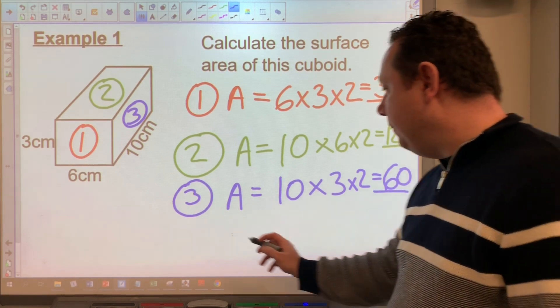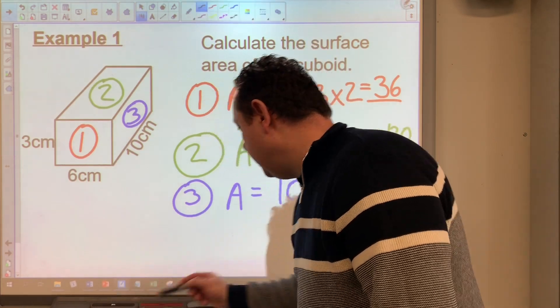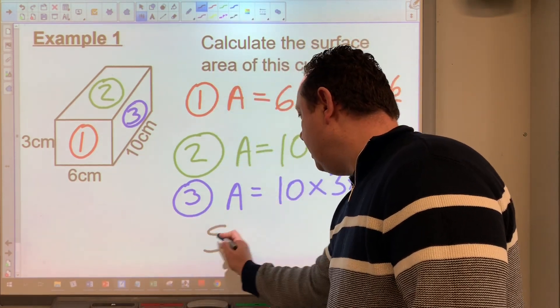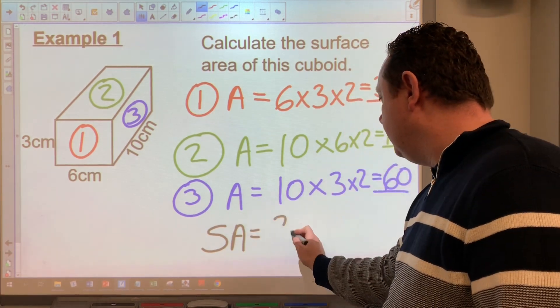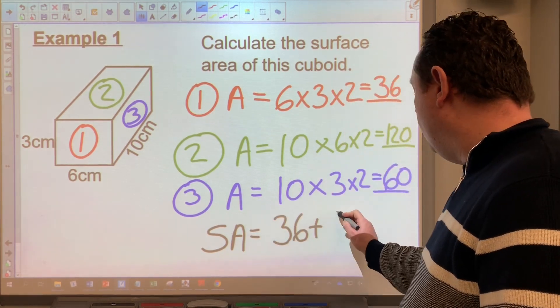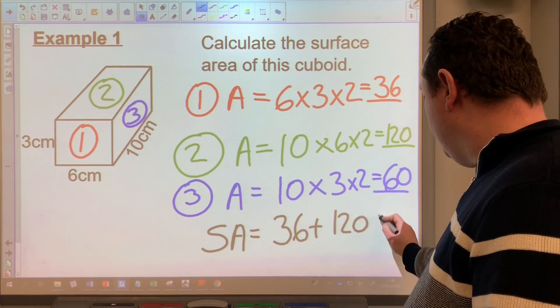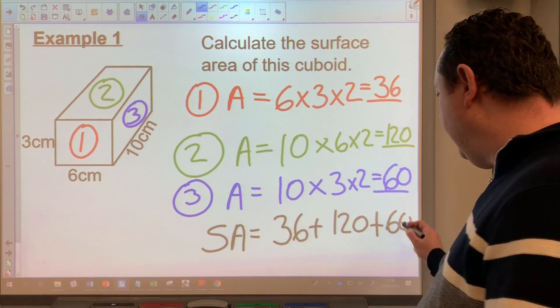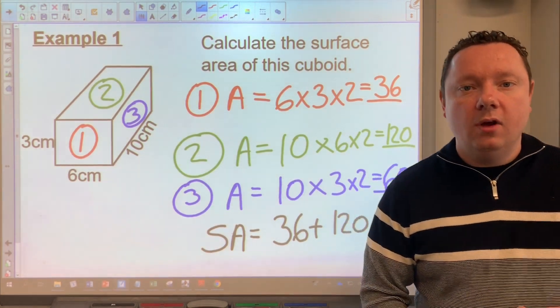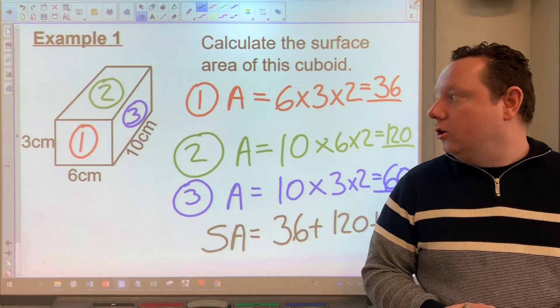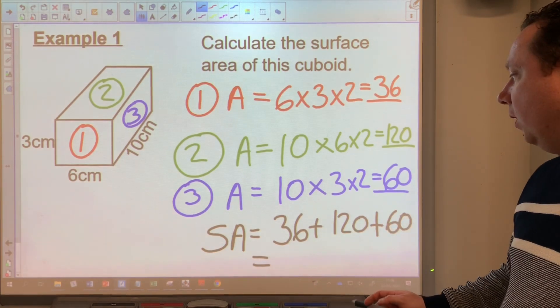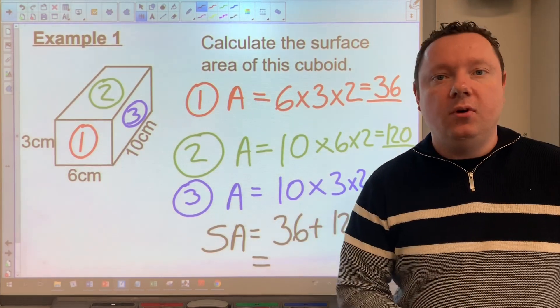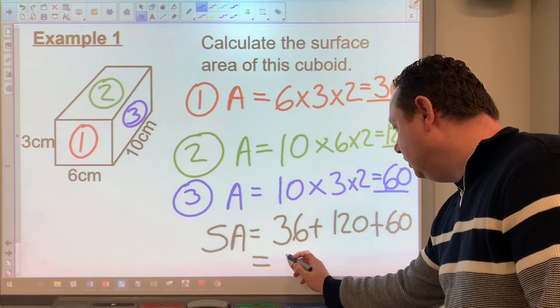So that means that the surface area, I'll just write the letters SA to represent surface area, must be 36 plus 120 plus 60, the area of every single face in our cuboid. If we work that out, we get 120 plus 60 is 180, 180 plus 36 is 216.